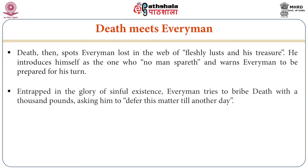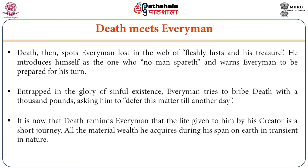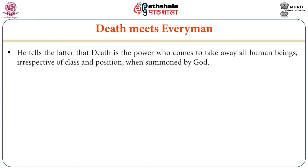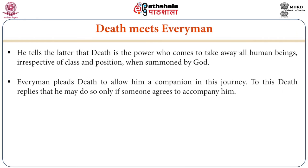Entrapped in the glory of sinful existence, Everyman tries to bribe Death with a thousand pounds, asking him to defer the matter till another day. Death reminds Everyman that life given to him by his creator is a short journey; all the material wealth he acquires is transient and will evaporate in one day. Death is the power which comes and takes away all human things. Everyman pleads with Death to allow him a companion in his journey, and Death replies he may do so only if someone agrees to accompany him.